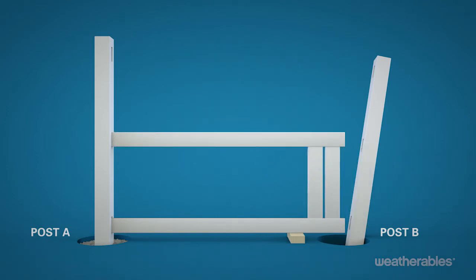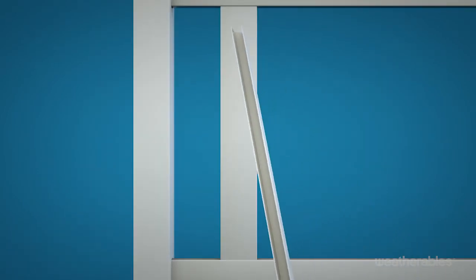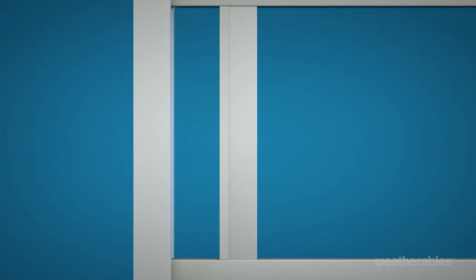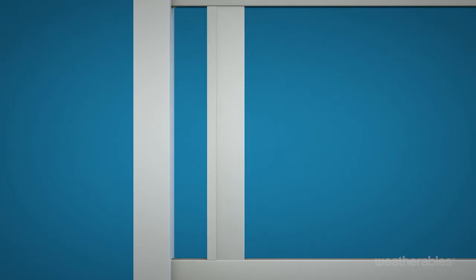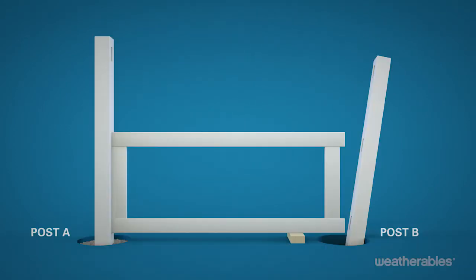Slide the first two tongue and groove pickets in between the mid and bottom rails. Continue sliding the first picket between the mid and bottom rails until it's approximately 12 inches from post A. Then, slide the U-channel into place before sliding the picket the remainder of the way toward post A until it is flush with the post.